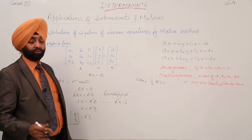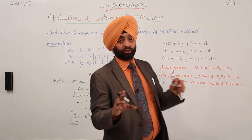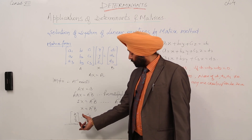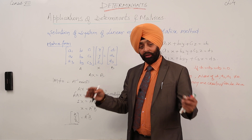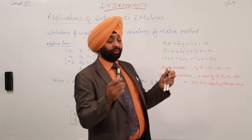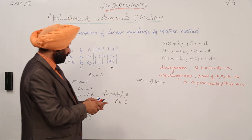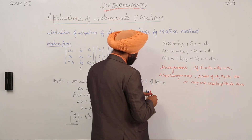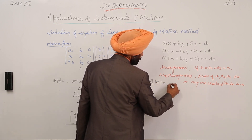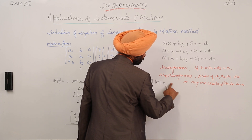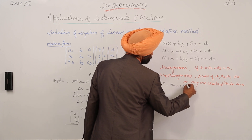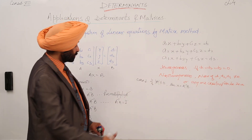Therefore X = A⁻¹B, where capital X represents the variables x, y, and z. The result A⁻¹B will also be a 3×1 matrix, giving us the values for x, y, and z respectively. This is the solution when det(A) ≠ 0.